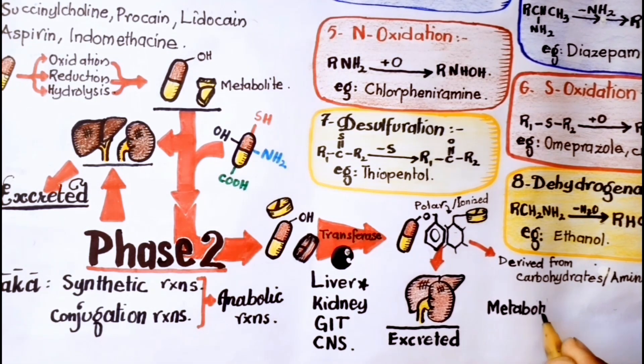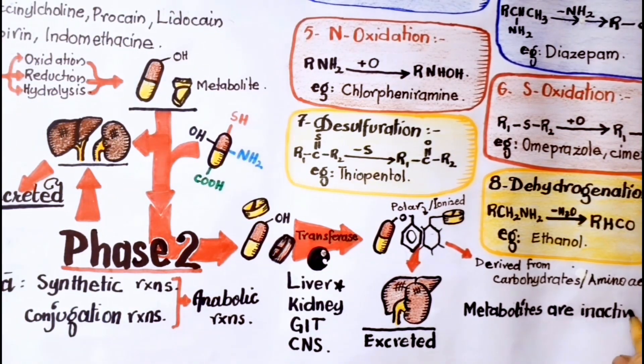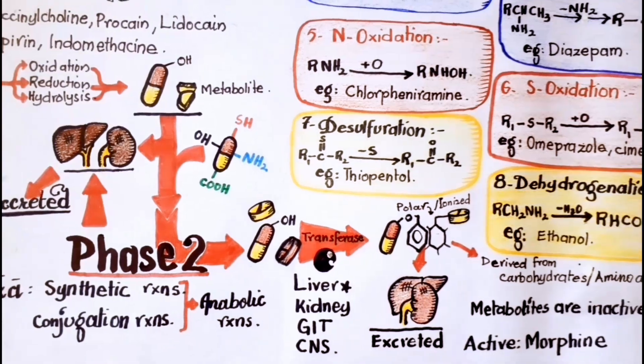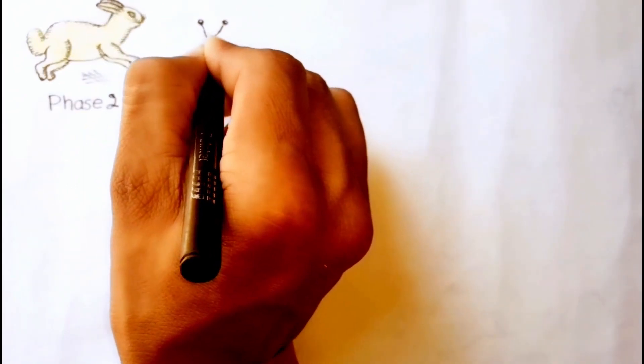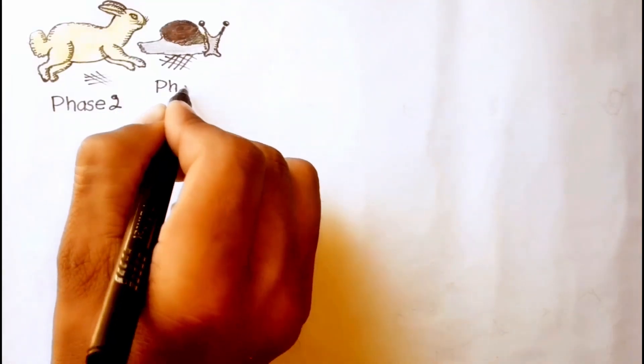Metabolites are mostly inactive, except for pure drugs. For example, glucuronide conjugate of morphine and sulfate conjugate of minoxidil are active. Generally, phase 2 reactions are relatively faster than phase 1 reactions, thus effectively accelerating drug biotransformation.